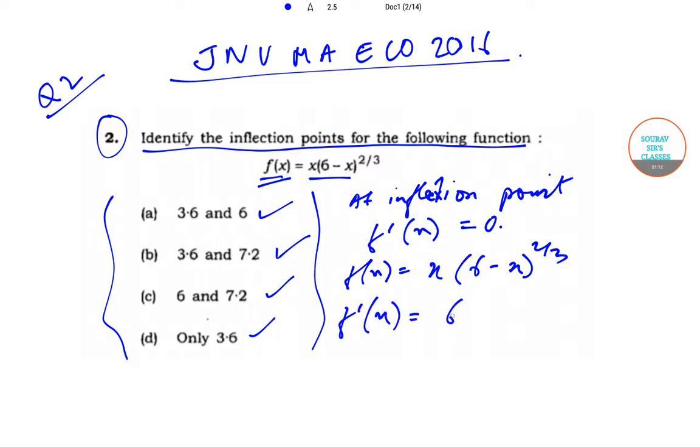Now if we find out f'(x), that will give us (6-x)^(2/3) plus x into 2/3 into (6-x)^(1) minus 1/3 into minus of 1.